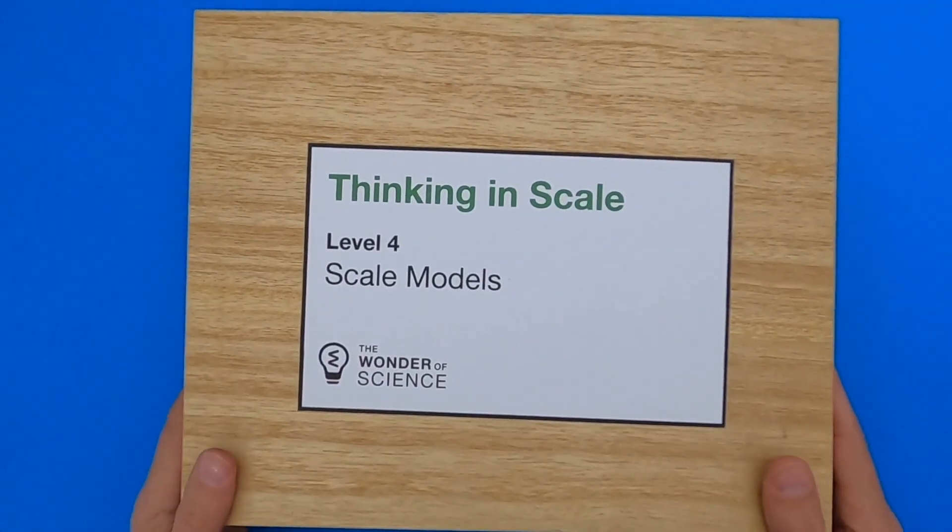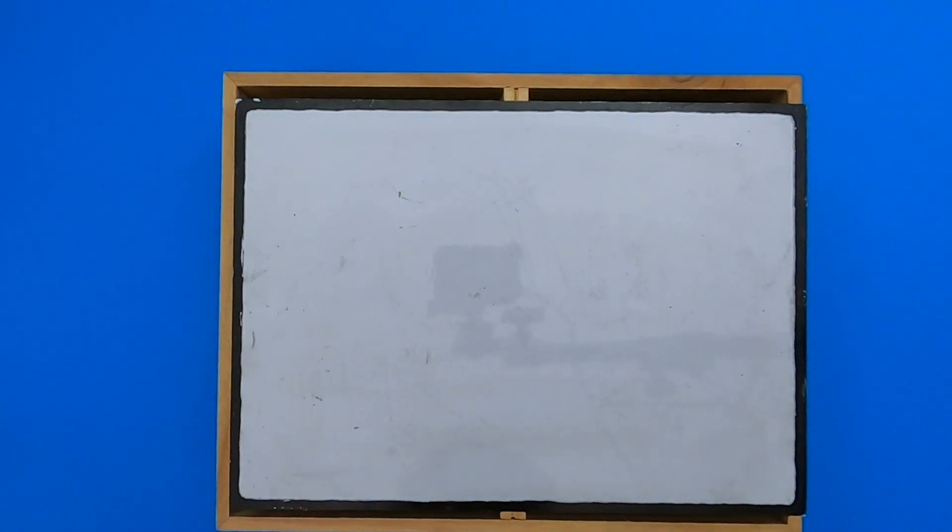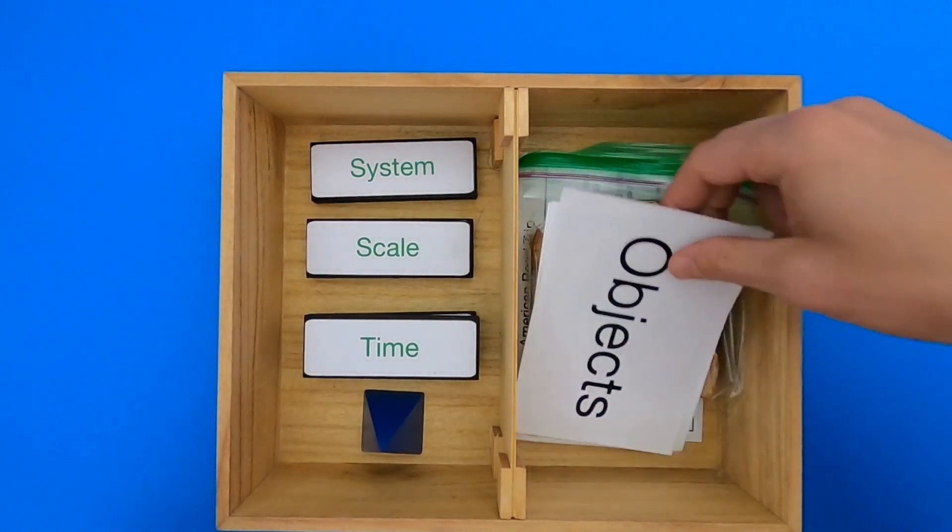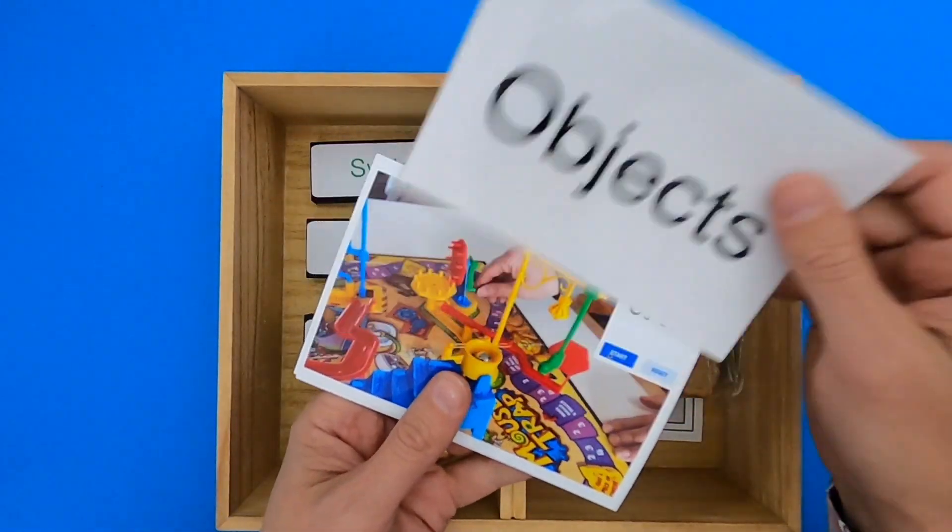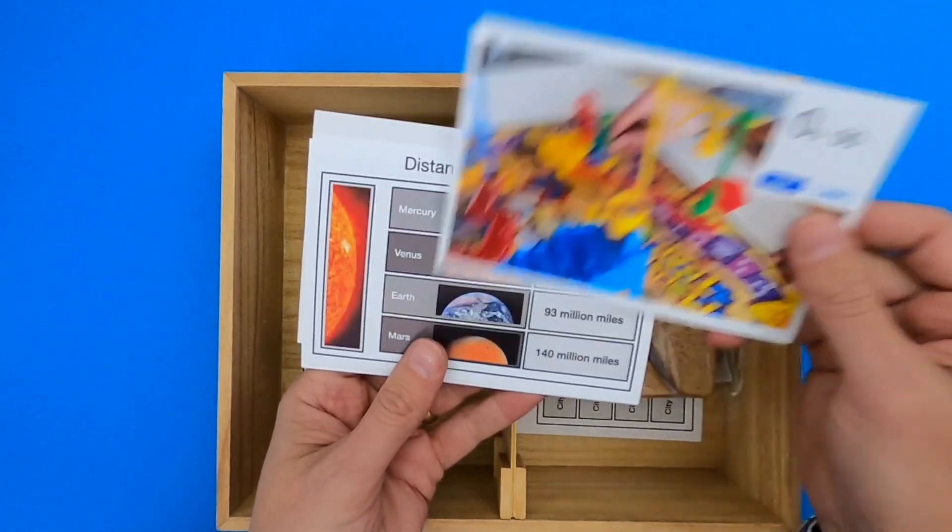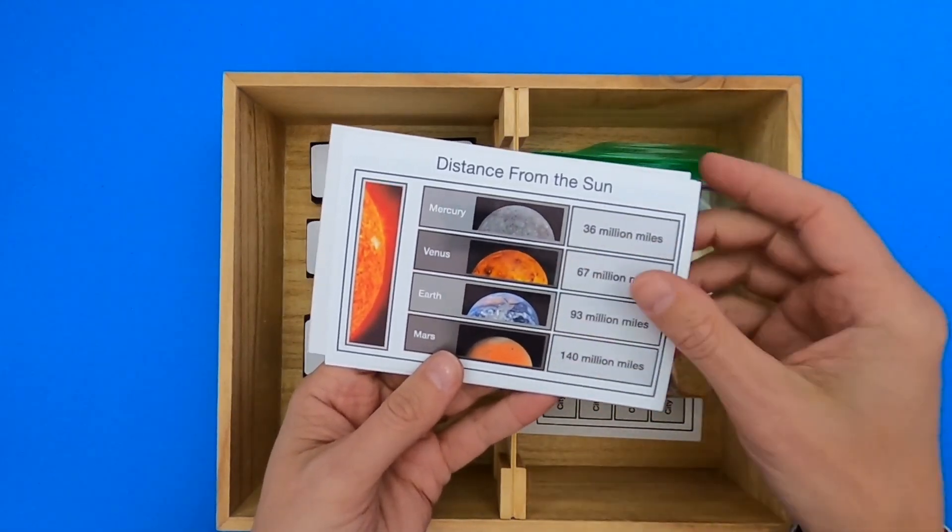Hi, it's Mr. Andersen and this is Thinking in Scale Level 4 Scale Models. You can see since there's a whiteboard in the box that we'll be doing some modeling. After watching this video, you should be able to create a time scale model of the events that take place in a game of mousetrap or a spatial scale model of the inner planets.